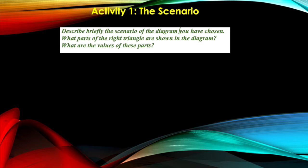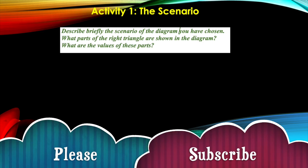Let me read the prompts. Describe briefly the scenario of the diagram you have chosen. Second, what parts of the right triangle are shown in the diagram? Third, what are the values of these parts?